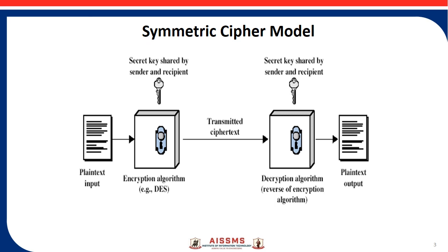We do not need to keep the algorithm secret — we only need to keep the secret key. This feature of symmetric encryption is what makes it feasible for widespread use, allowing easy distribution of software and hardware implementations. The secret key controls the exact substitutions or transformations used in the encryption algorithm, and the result is a scrambled ciphertext.